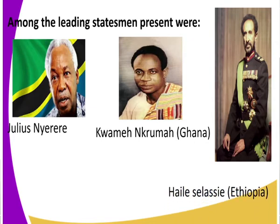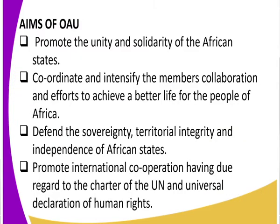What were some of the aims of the OAU? First, it was to promote unity and solidarity of the African states. Second, to defend the sovereignty, territorial integrity, and independence of Africans — after they had gained independence. Third, to promote international cooperation with due regard to the UN Charter and the universal declaration of human rights, so that all member states could cooperate in trade and other matters.